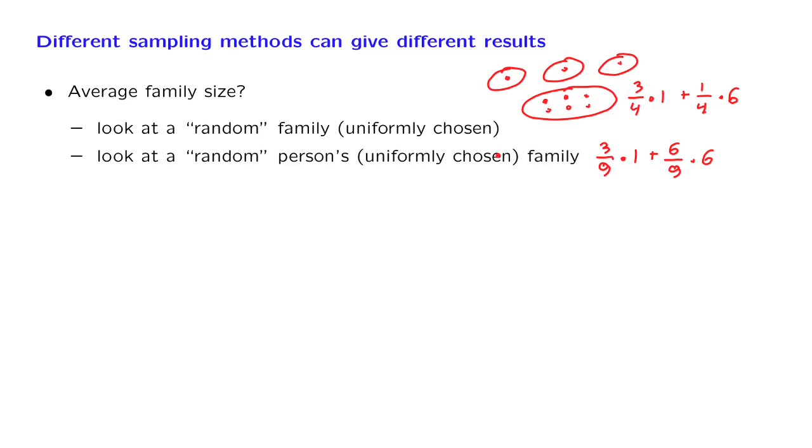So it is possible to have a situation where you can make a statement such as the following: the average family size is three, but the average person lives in a family of size four. There is no contradiction between these two statements because we're measuring different things.